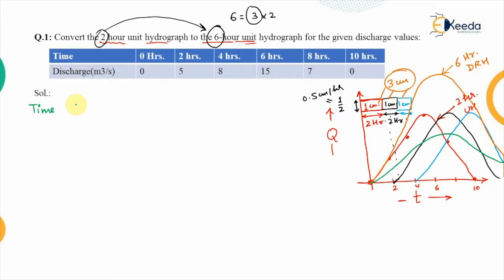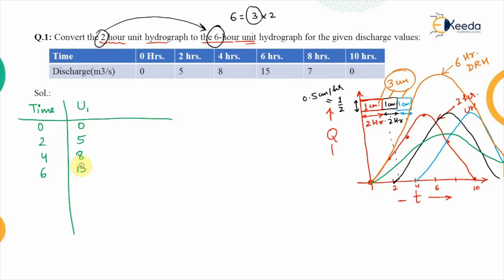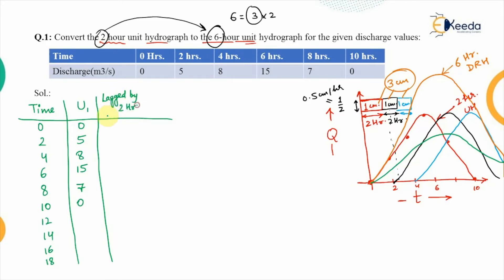We write down the time and discharge for U1: at 0 → 0, at 2 hrs → 5, at 4 hrs → 8, at 6 hrs → 15, at 8 hrs → 7, at 10 hrs → 0 (extending the time scale up to 18 hours). For U2, we lag U1 by two hours, so the value that occurred at 0 now appears at 2 hours.